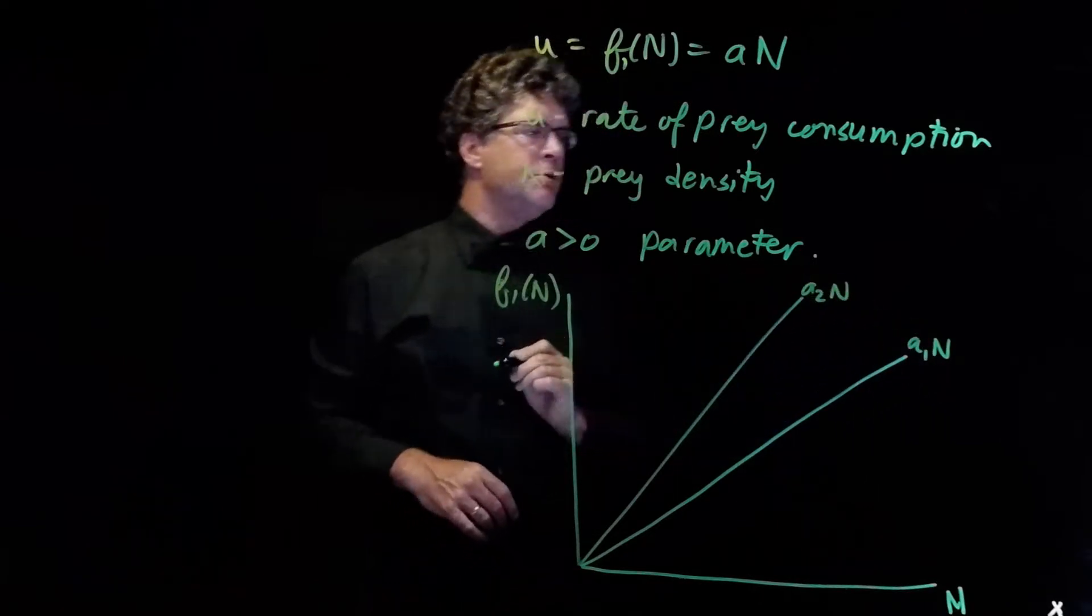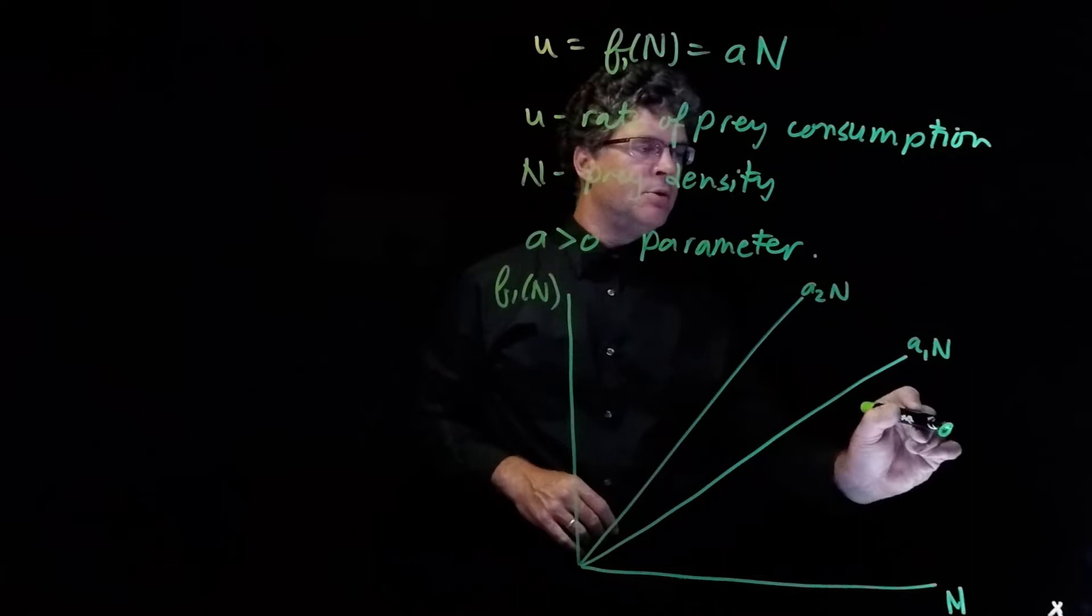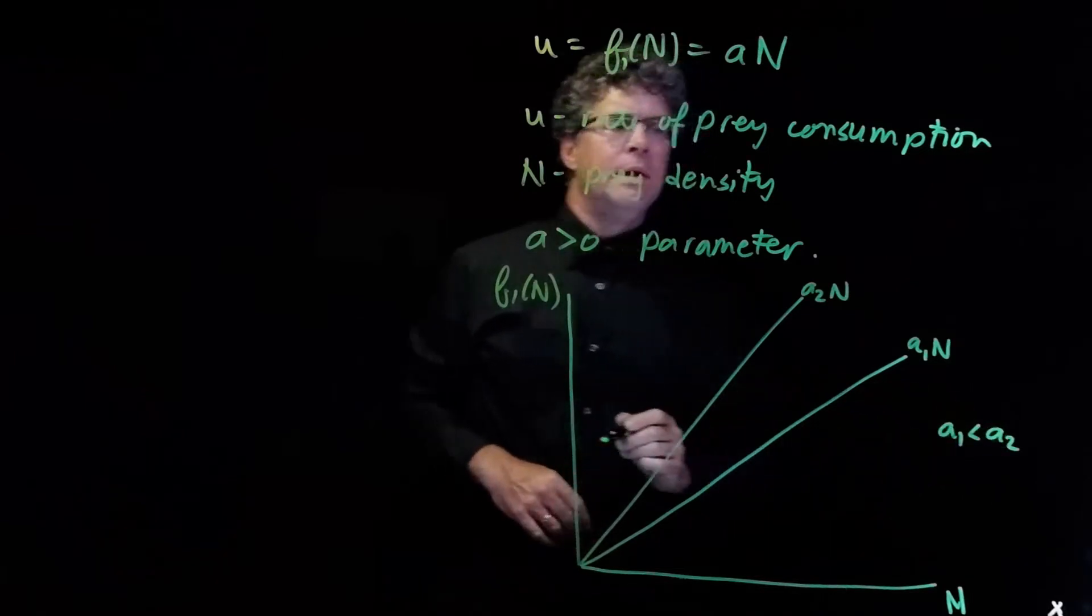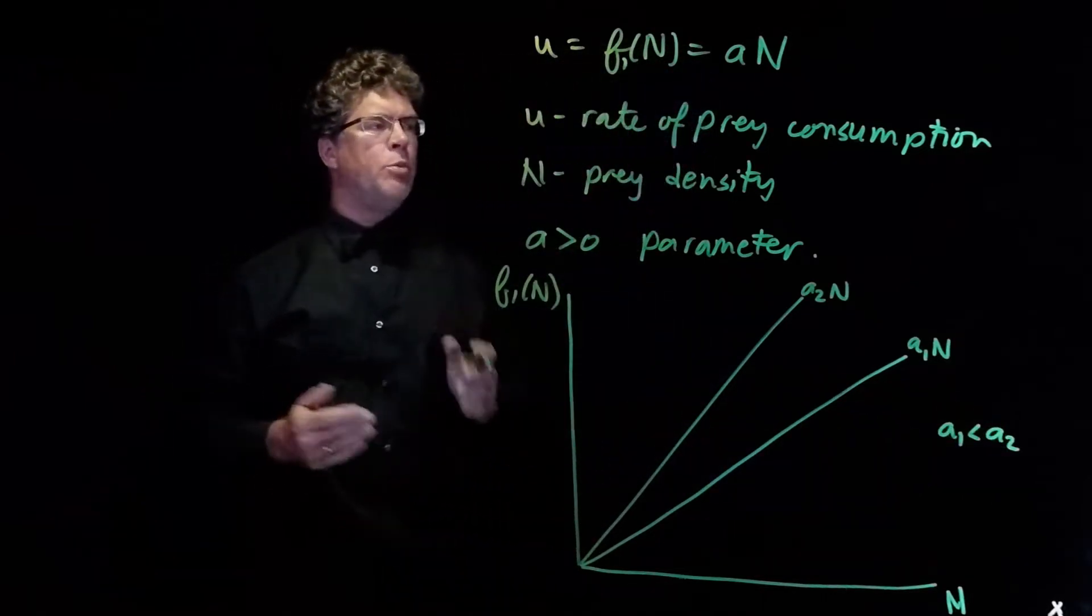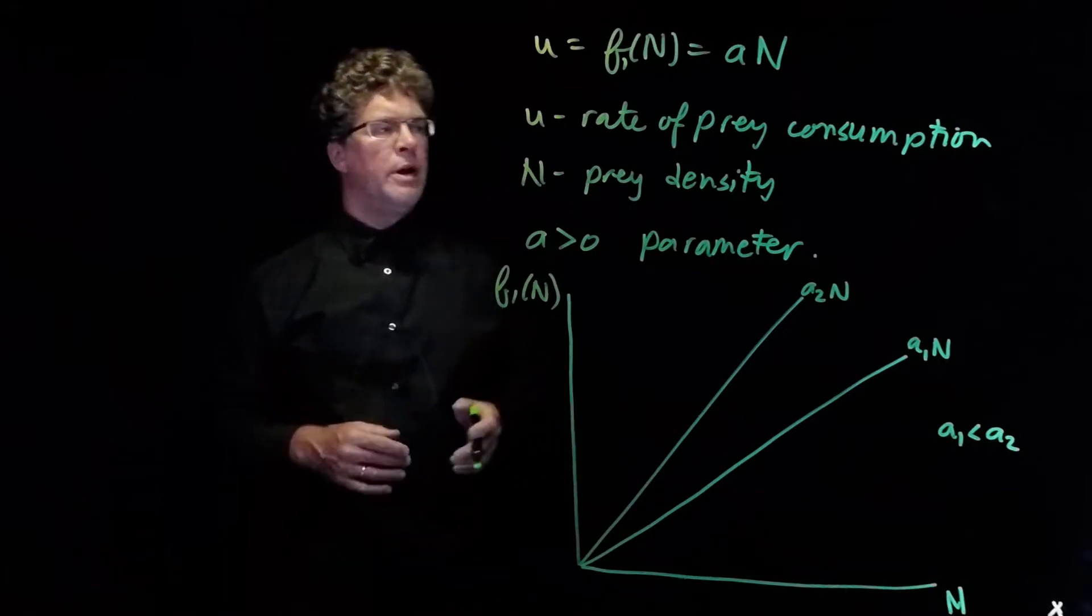And I've chosen two different parameters, a1 and a2, where a1 is less than a2, just to show that the slope of the line gets larger when a gets larger.